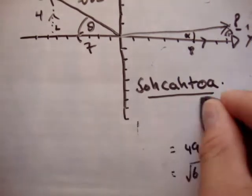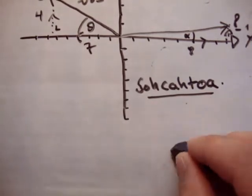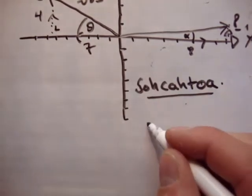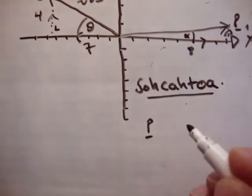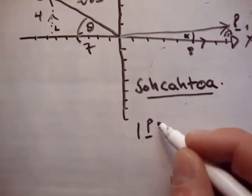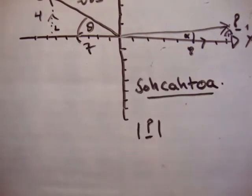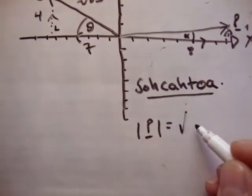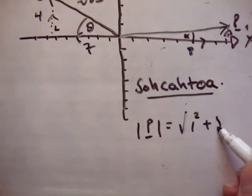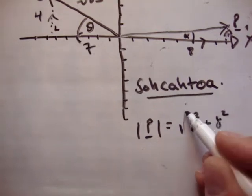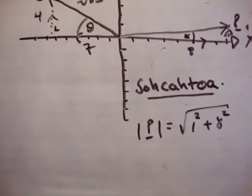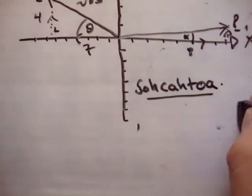What's the magnitude of vector P? Well, the magnitude of P is equal to the square root of 1 squared plus 8 squared, which is also equal to the square root of 65 — just do that small bit of mathematics.